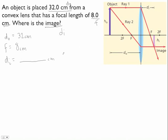So here's our formula. We have 1 over f equals 1 over di plus 1 over do. And we want to find this right here.